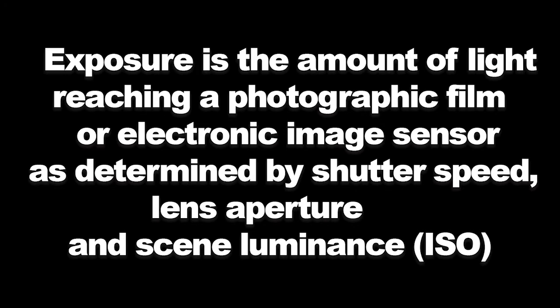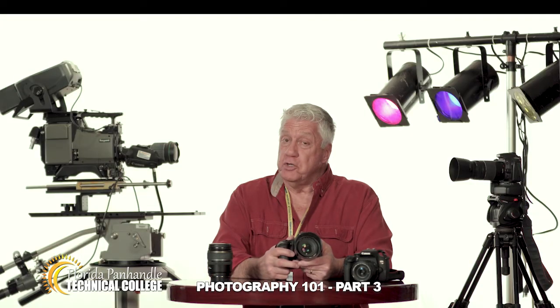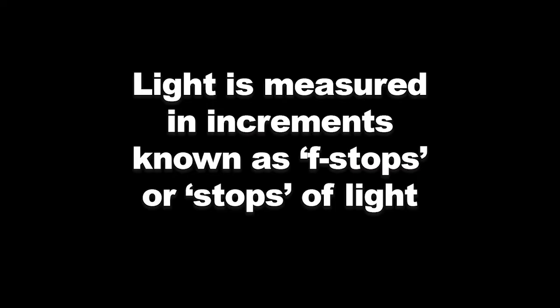Exposure is the amount of light reaching a photographic film or electronic image sensor, as determined by shutter speed, lens aperture, and scene luminance, which we'll refer to as ISO. Light is referred to and measured by increments known as f-stops, or simply stops of light.